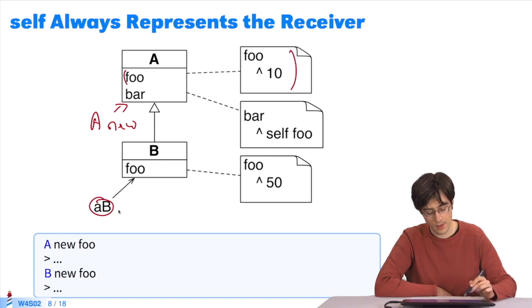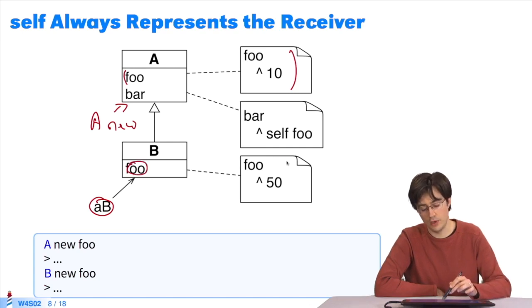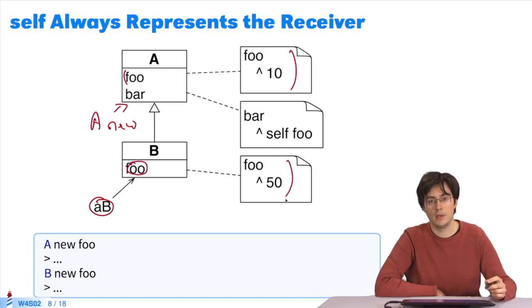For b new, we start with a b, the same thing as b new. We search for a method, foo. The lookup algorithm finds it, executes it, and returns 50. So, here we have 10 and 50.